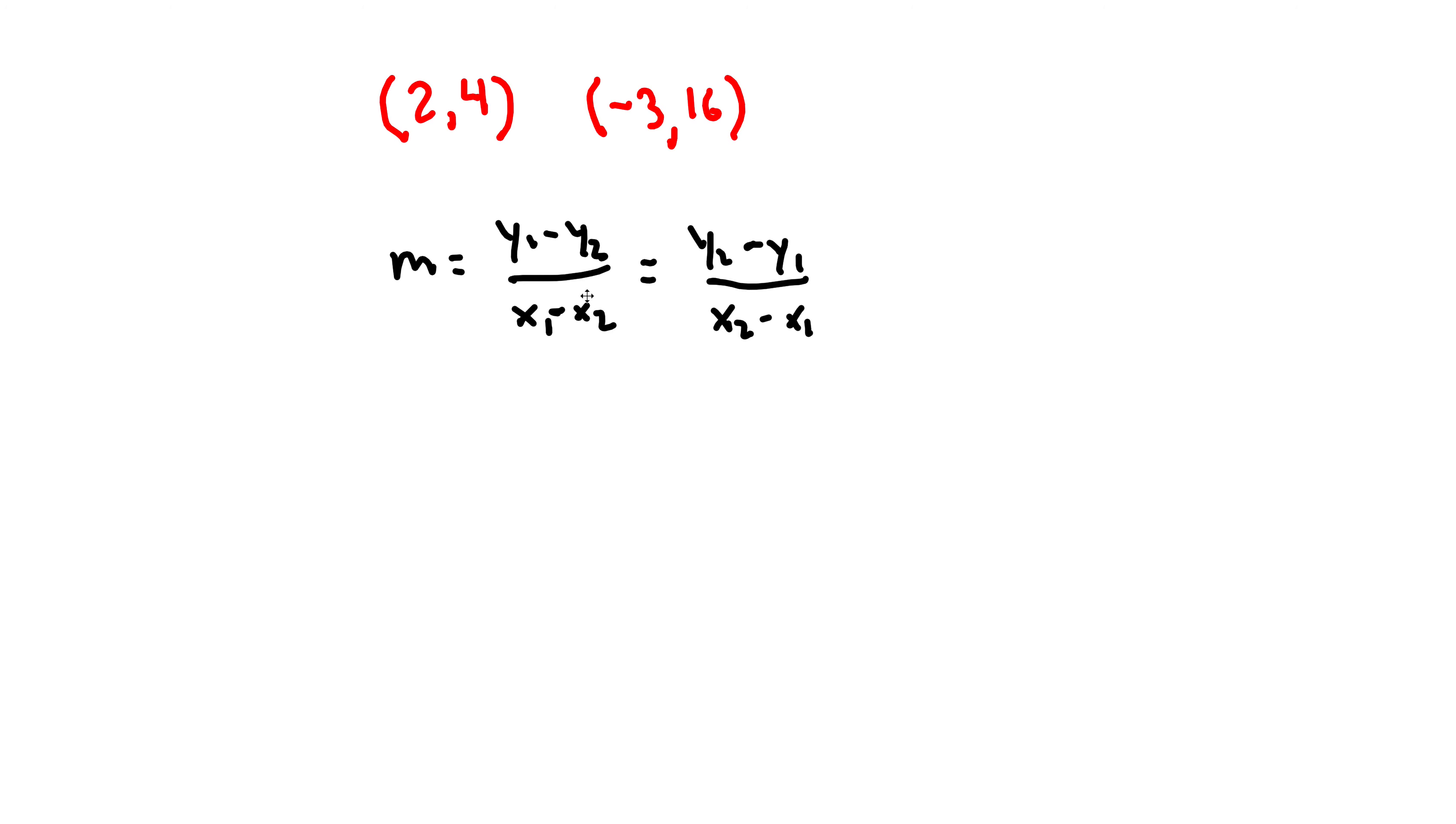Probably the easiest way to remember this is that slope is rise over run. So if you were to take a look at this point here and this point here, the rise is always going to be the y values.